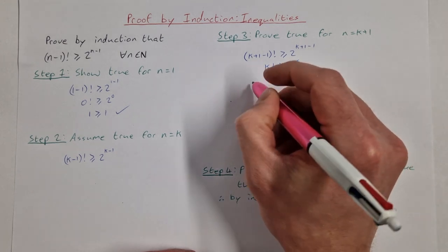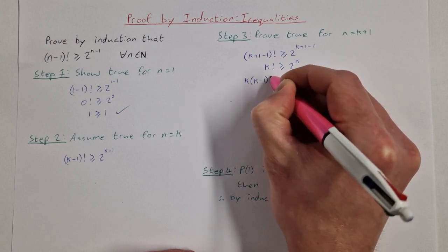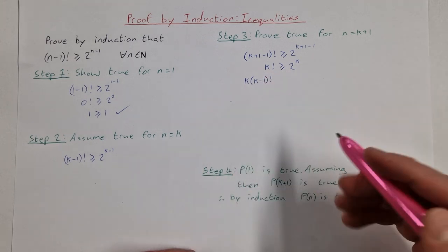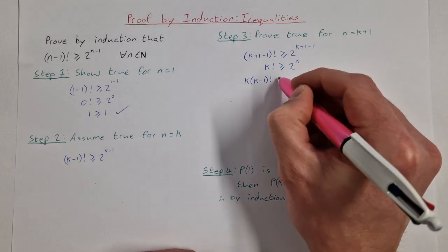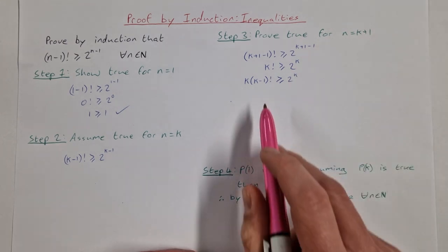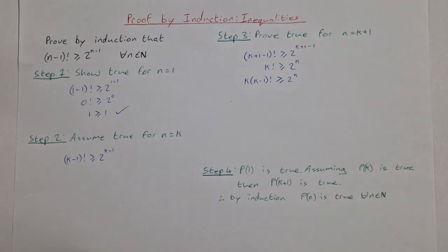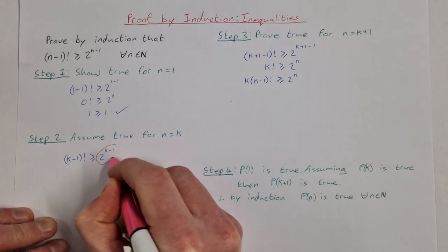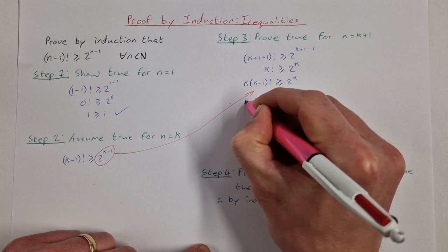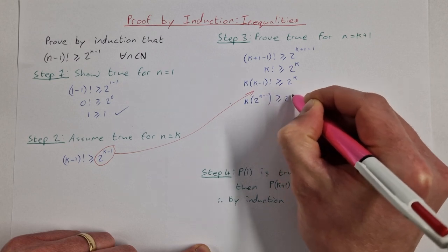Now, k! can be written as k × (k-1)!, because k! is just k × (k-1) × (k-2) × (k-3) × etc. So that's k × (k-1)! ≥ 2^k. Now, I can replace (k-1)! with the inductive assumption, giving k × 2^(k-1) ≥ 2^k.